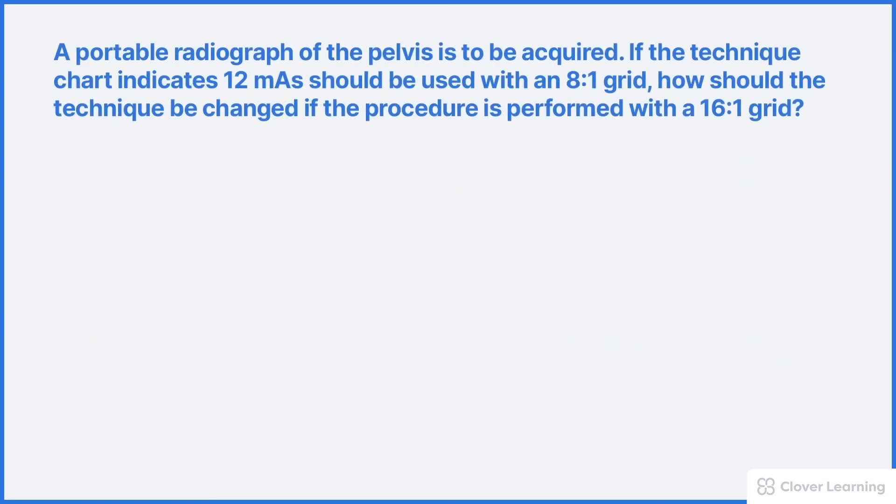Here's another example. A portable radiograph of the pelvis is to be acquired. If the technique chart indicates 12 mAs should be used with an 8 to 1 grid, how should the technique be changed if the procedure is performed with a 16 to 1 grid? It might be tempting to just double the mAs since the grid ratio doubled, but that's actually not how it works.